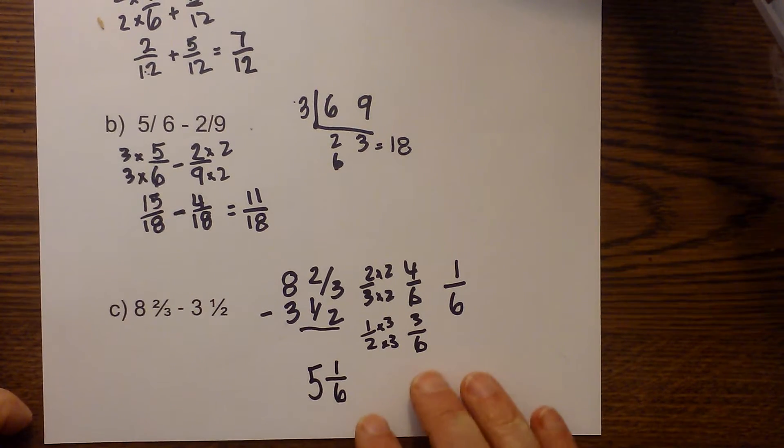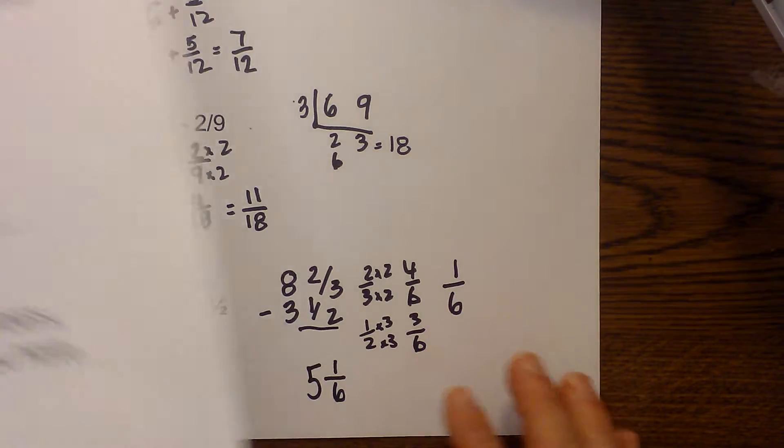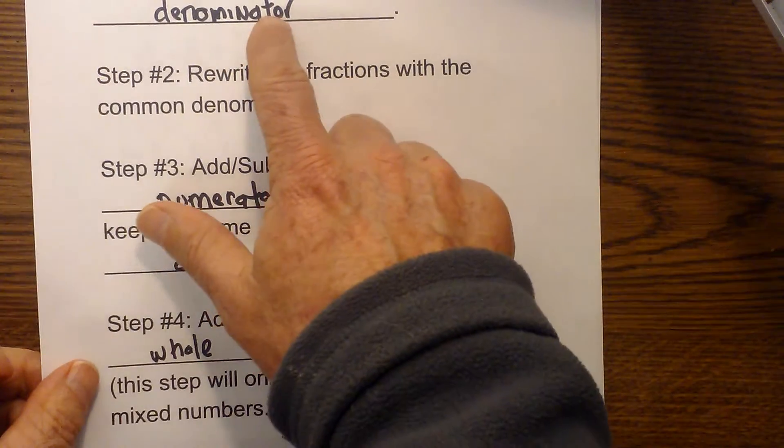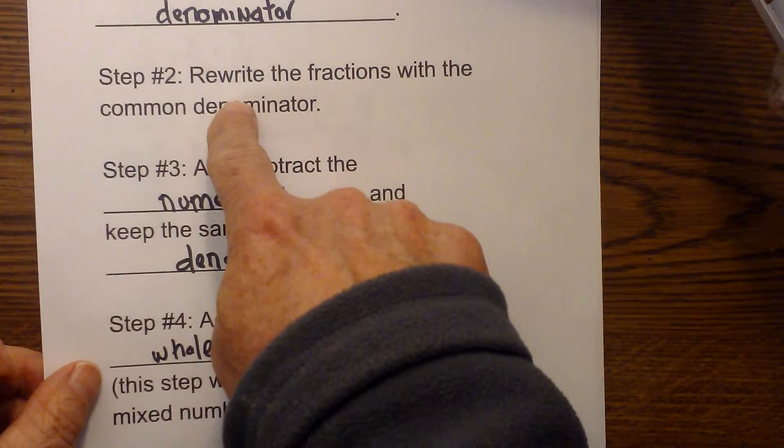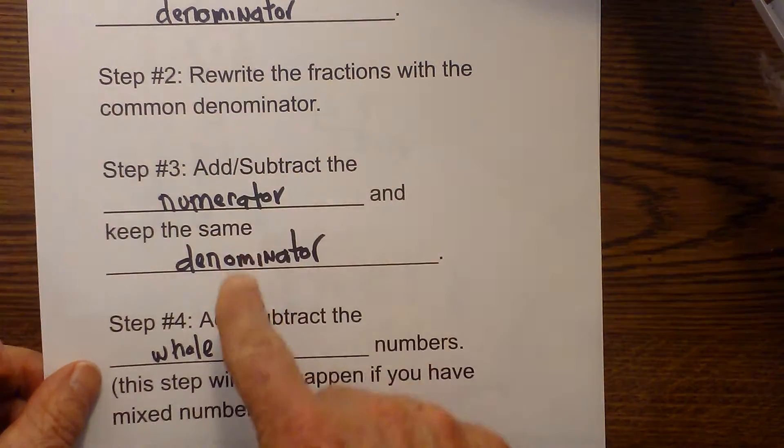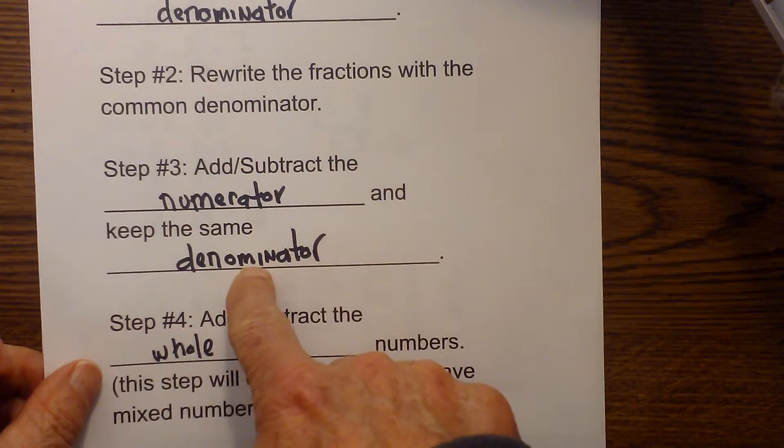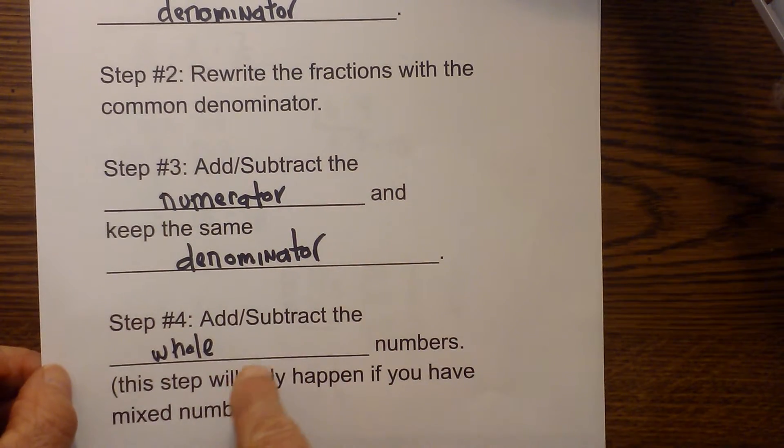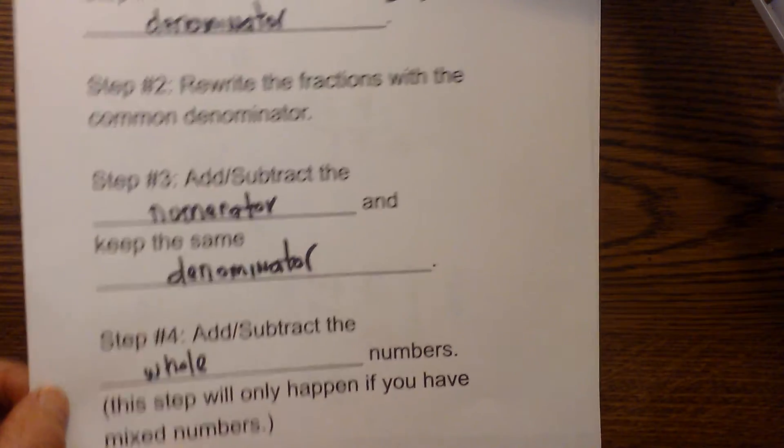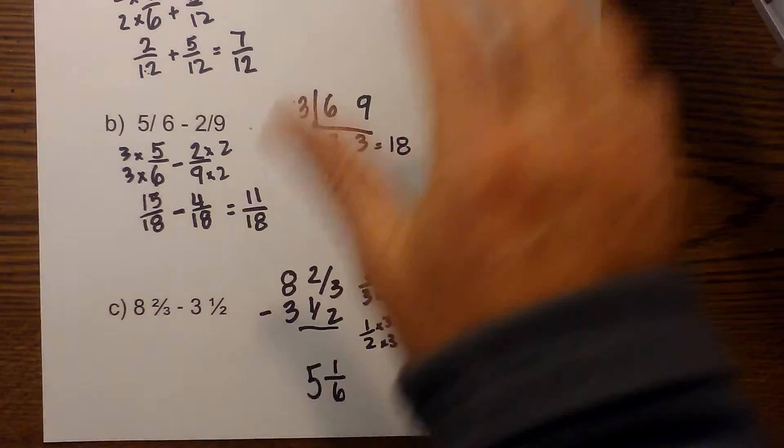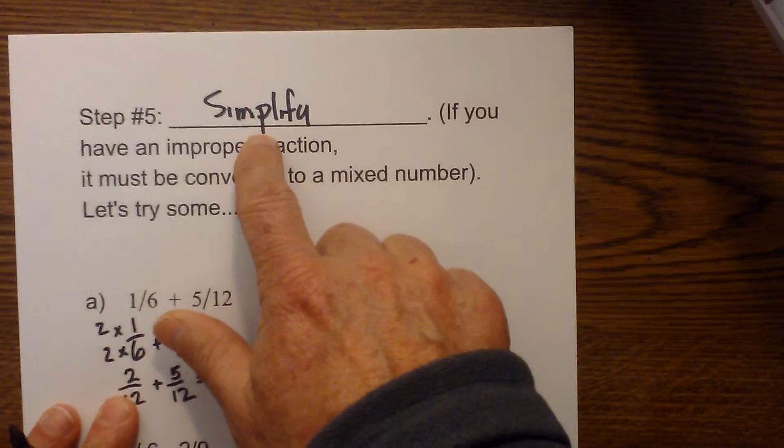I hope that helps with adding and subtracting fractions. Let's go over the rules one more time quickly. You find a common denominator. You rewrite the fractions with the common denominator. You add and subtract the numerator. Keep the denominator the same. And then you add and subtract the whole numbers. This only happens if you have a mixed number. And then finally, last but not least, you simplify.